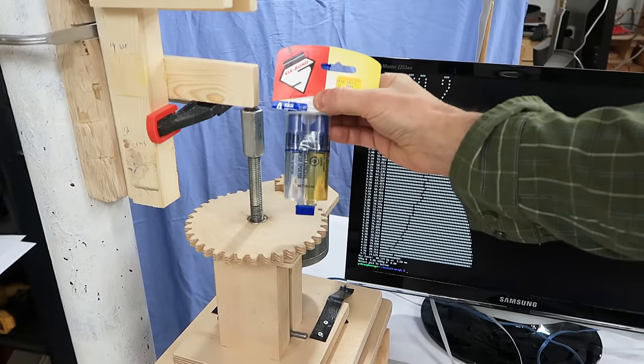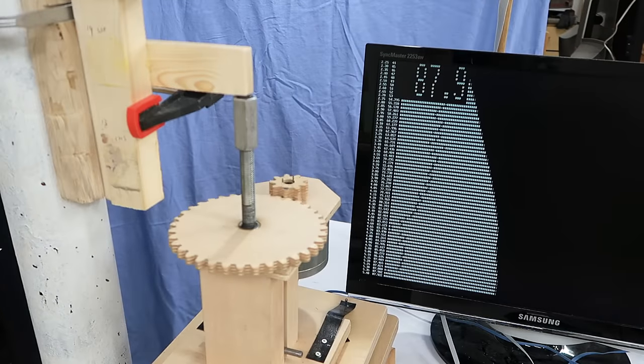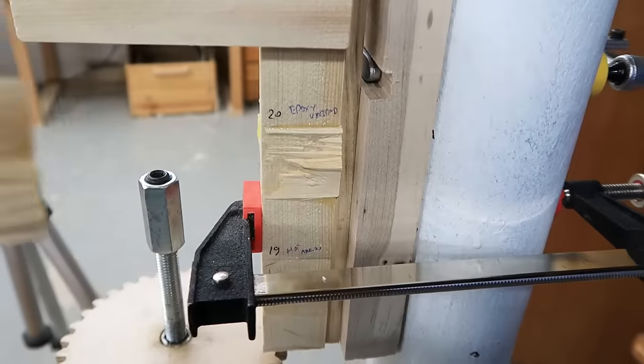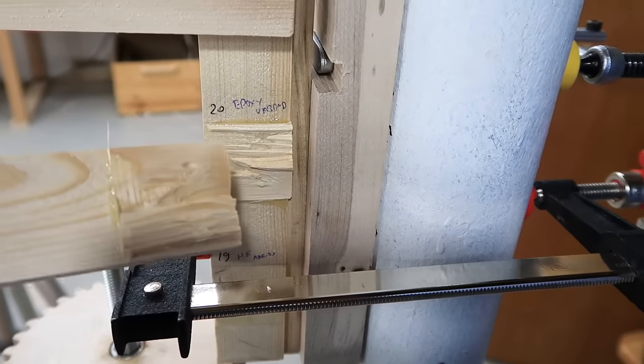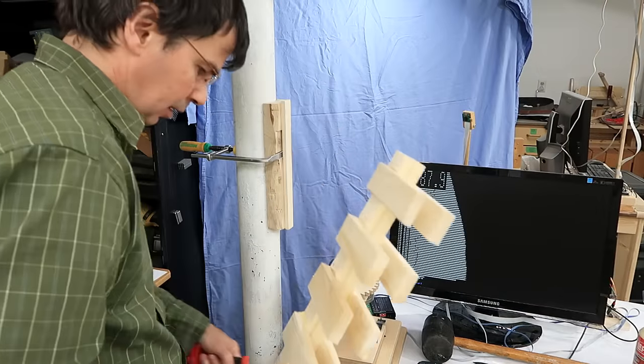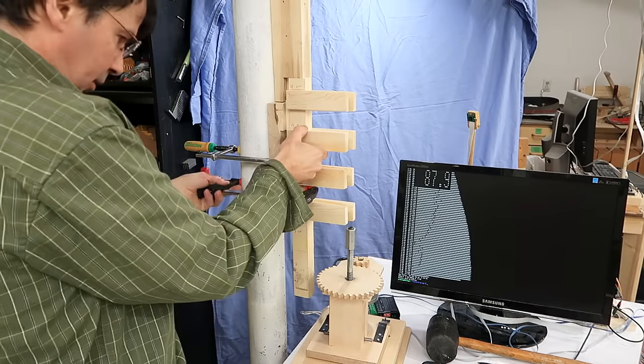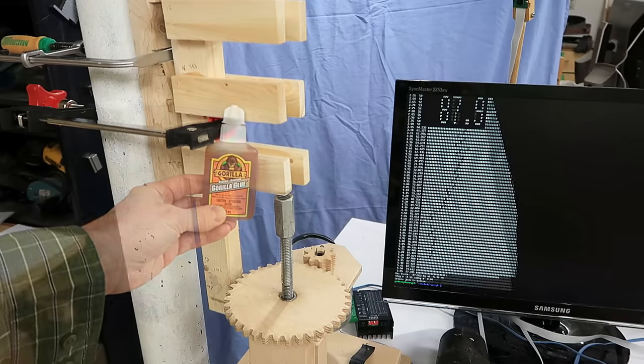This brand of epoxy from Home Hardware. This is the first one so far to really tear a chunk out of the wood. Gorilla Glue. The kind that really foams up.